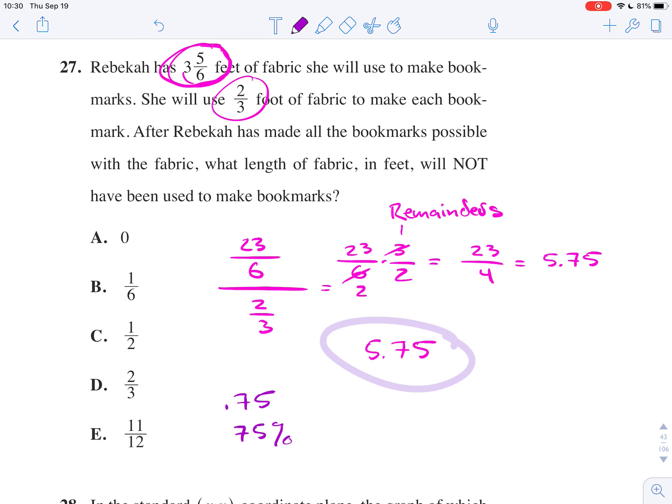Well, that is where we're going to get our answer, because if each bookmark is 2/3 of a foot, or needs 2/3 of a foot of fabric, we can find 75% of that.